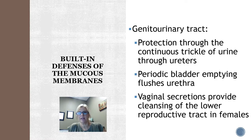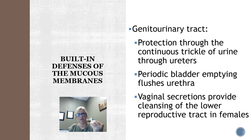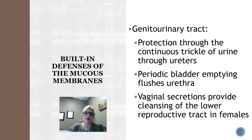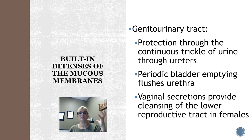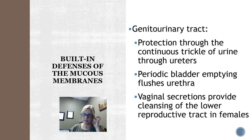The genitourinary tract includes the genital and urinary areas. A constant trickle of urine going through the ureters is a flow of fluids that flushes out bacteria. Emptying your bladder flushes the urethra. Vaginal secretions have chemicals that act as a chemical line of defense, and the pH in the vagina is protective. Urine itself is also a chemical defense.